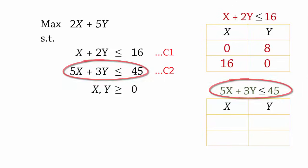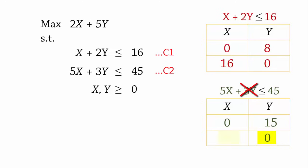For the second constraint, when X equals 0, Y equals 15. And when Y equals 0, X equals 9.